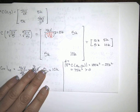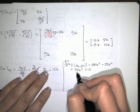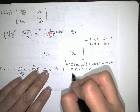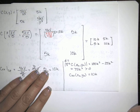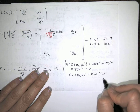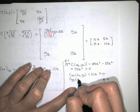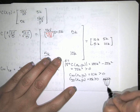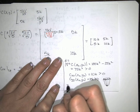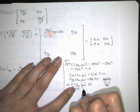Since D is positive, we have either a min or a max. To determine which, we look at the second partial with respect to x at the critical point, which is 10k. Since k is the cost of glass and is positive, this second partial is positive, meaning the graph is concave up in the x direction. Since D is positive, the second partials in x and y have the same sign — both positive — so we have a relative minimum.